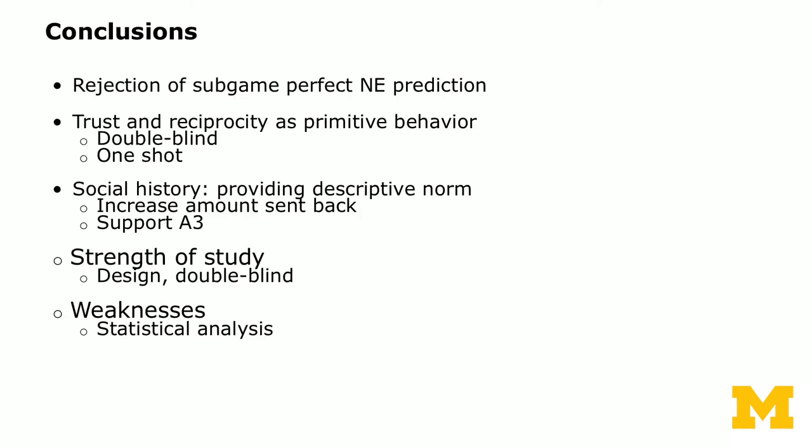You see a spectrum of behavior, but the conclusion is we can reject the subgame perfect Nash equilibrium prediction of sending nothing and returning nothing. This is a good measure of trust and reciprocity as primitive behavior, because it's conducted under double-blind conditions and is a one-shot game — so there's no way to establish a reputation. The strength of the study is in the experimental design; the paper prints the instructions in full. There is a slight weakness in the statistical analysis.